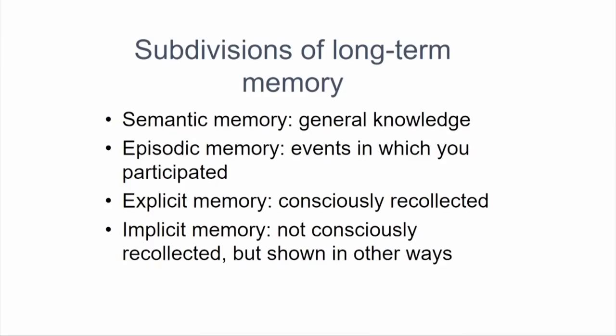There are several subdivisions of memory. One is called semantic memory, which is memory for general knowledge. It stores facts, arithmetic rules, the meaning of words like bigger or smaller, the capital of Finland, the capital of the United States, who was the first US president, who was the first Indian president — that kind of factual information. It also stores things like where the sun rises and when it sets.